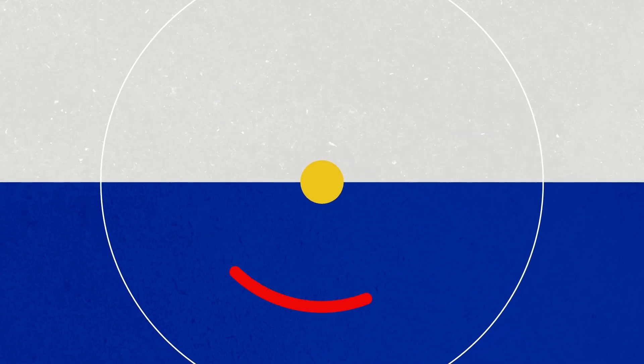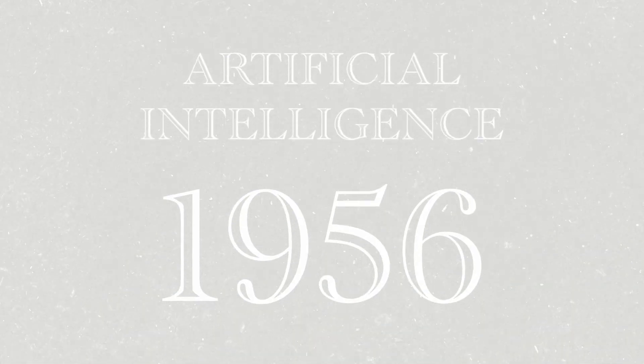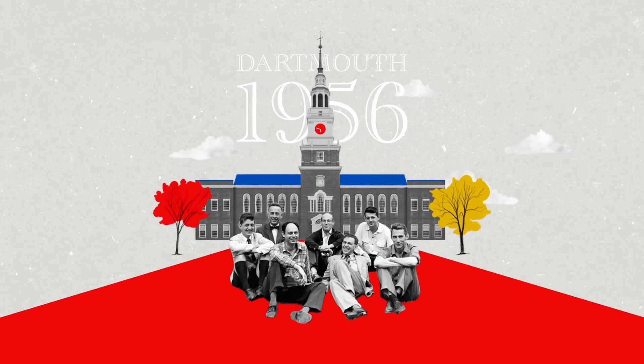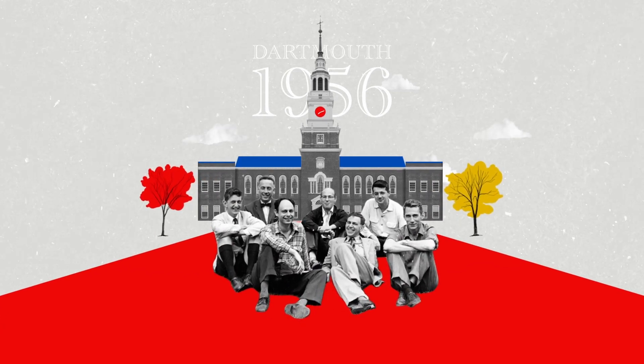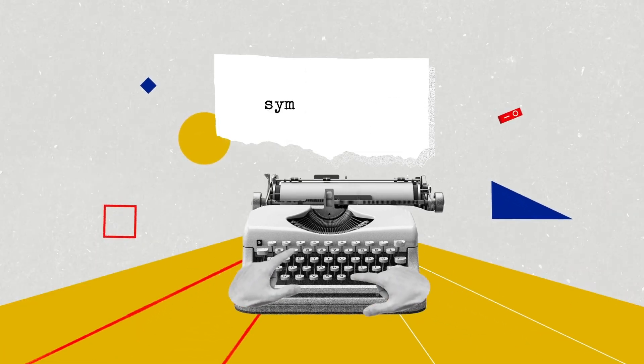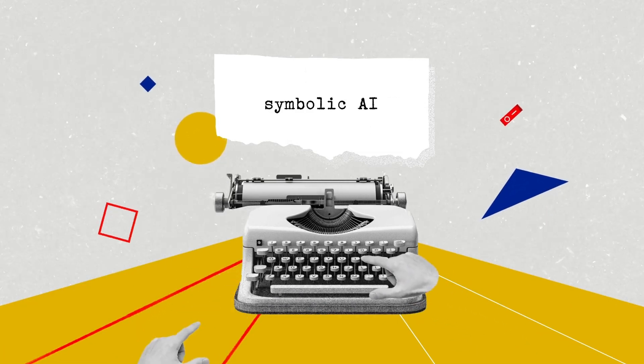The term artificial intelligence was coined in 1956 when mathematicians and computer scientists gathered at Dartmouth College in New Hampshire. The meeting was a catalyst for the approach called symbolic AI.